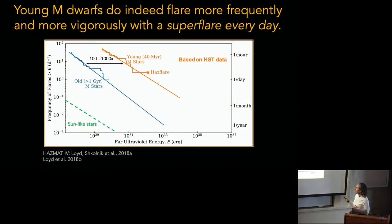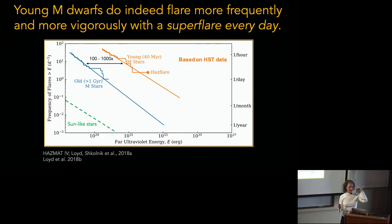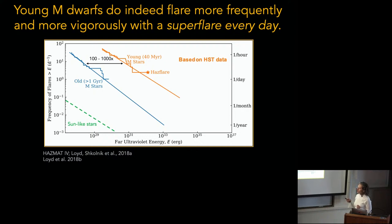The HAZMAT program is now able to tell us about the evolution of flares — what is the flare distribution on young stars compared to older stars? Here we have the young star flare frequency distribution: these jagged lines are from the data and this is just a fit to them. The old stars are 100 to 1,000 times less frequent or less energetic.